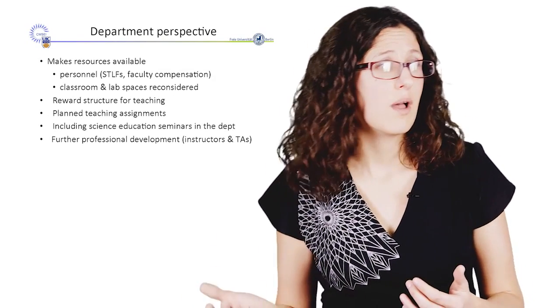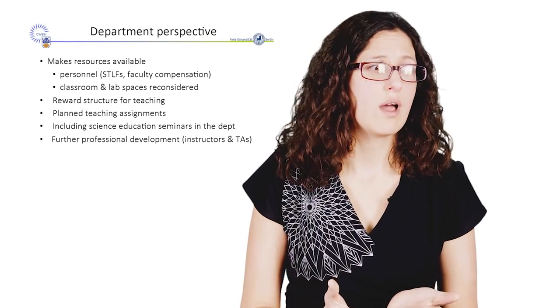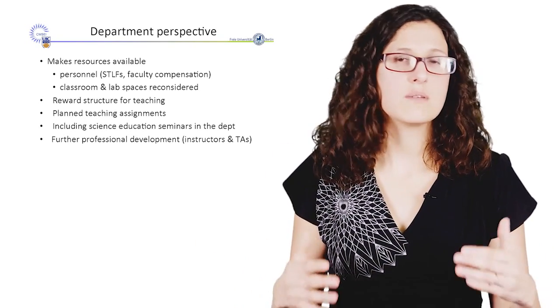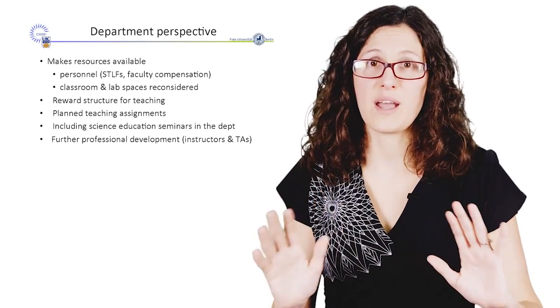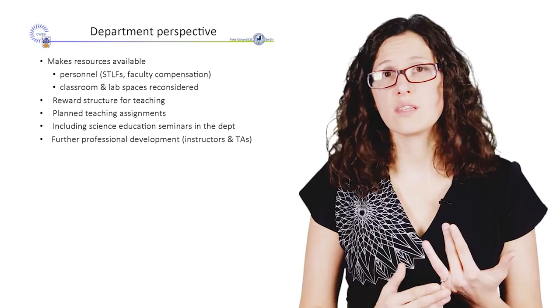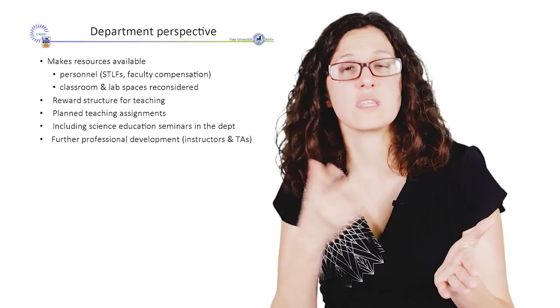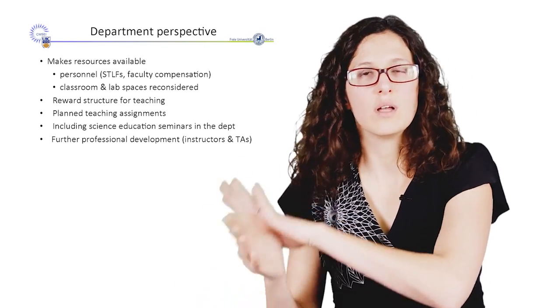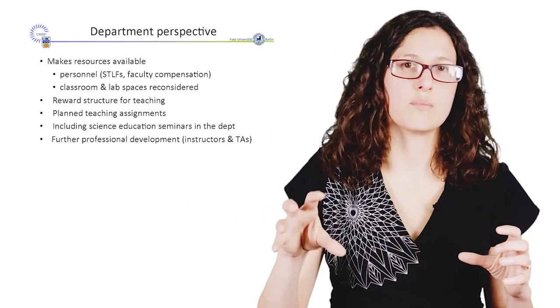What does it look like from the department's point of view? Well, they need to make the resources available. In one respect, that's money for the personnel and for the faculty compensation if they have a teaching buyout. But it's also they might have to reconsider classroom spaces, lab spaces. Is this conducive to group work? How can I incorporate that? And they need to figure out some reward structures for teaching. Very often teaching is sort of pushed down to the side over research. And I'm not trying to underscore research by any means. But we need to realize the time that teachers and instructors would put into changing a course. And we can do that by planning their teaching assignments. If they're going to transform a course, they can have that course for three or four years where they can do iterations when they see things aren't working. They can also maybe be guaranteed that a teacher who's going to take over their course at the end won't just go back to a frontal lecture and put all their work in the bottom of a dresser somewhere. So you have to have the department really on board and committed as well as the instructors.